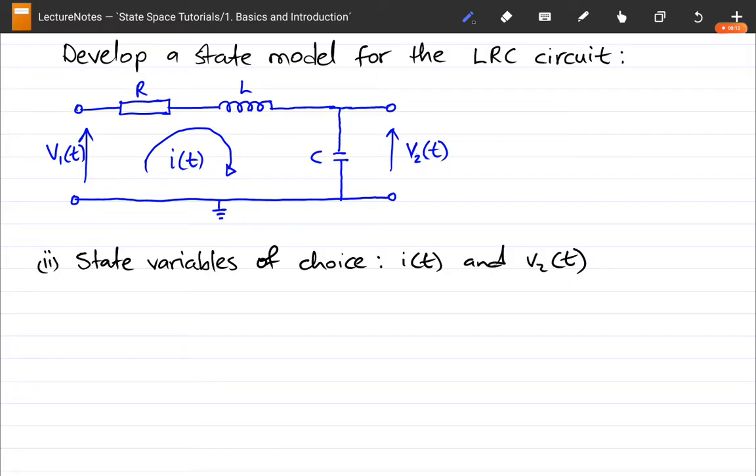But we used state variables V2 and its derivative V2 dot. In this example we're going to be working on today, we're going to be using V2, but also I of T, that's the current across the circuit. So we're still working on the same RLC circuit.